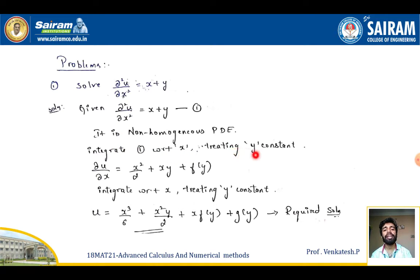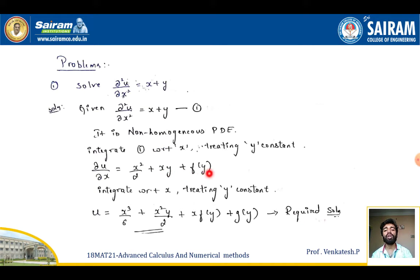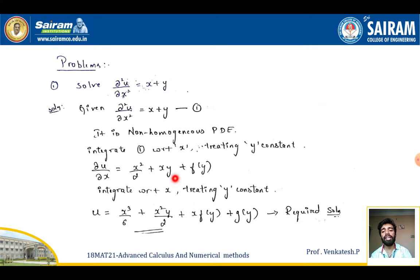First, integrating equation number one with respect to x treating y constant, we get ∂u/∂x = x²/2 + xy + f(y), since we take the integration constant as an arbitrary function f(y). Similarly, integrating again with respect to x treating y constant.